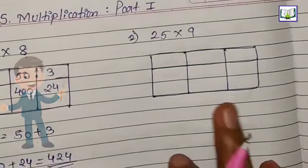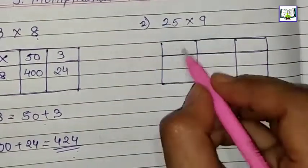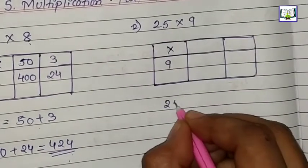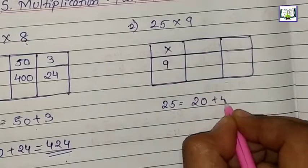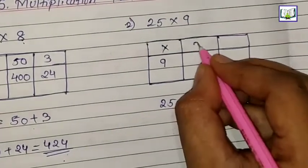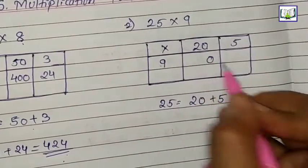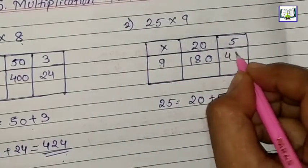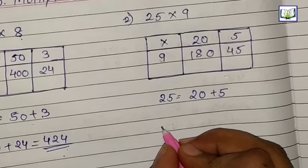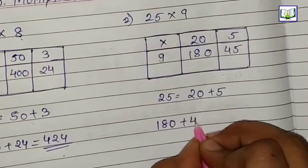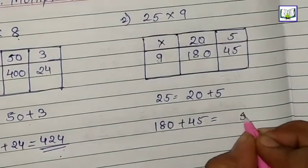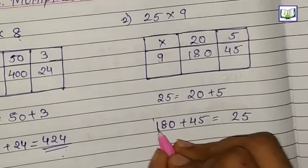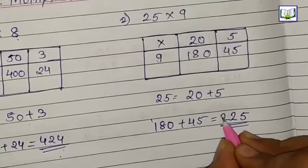Let's do the second sum. The question is 25 multiply by 9. Here we will write 9. Now we will break 25. 25 means 20 plus 5. 9 times 0 is 0, 9 times 2 is 18. 9 times 5 is 45. Now we will add: 180 plus 45 equals how much? 5, then 4 plus 8 gives 12. 2 here, 1 carry. 1 plus 1 is 2. So the answer is 225.